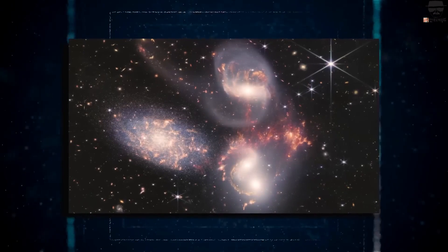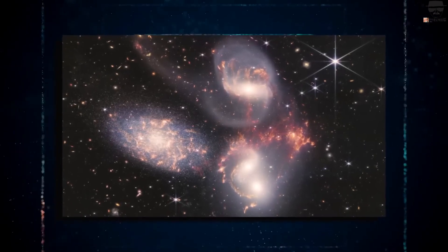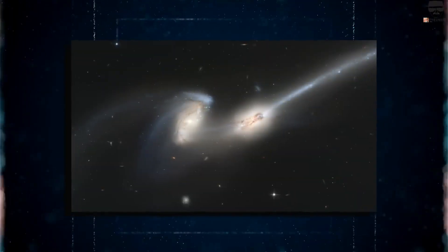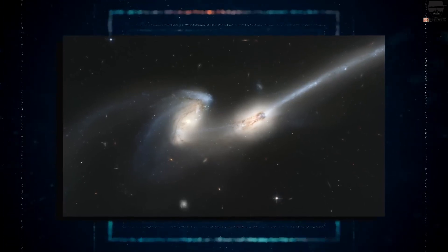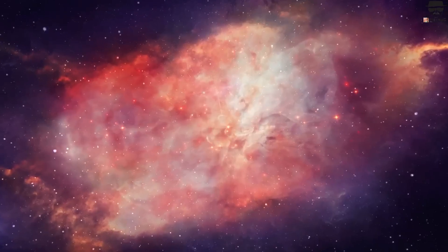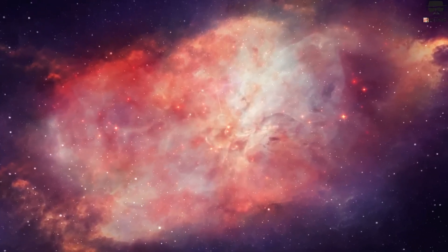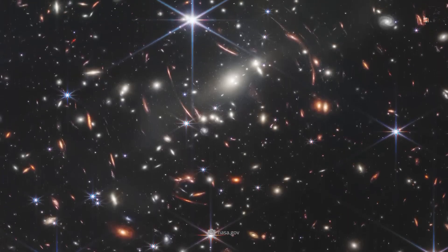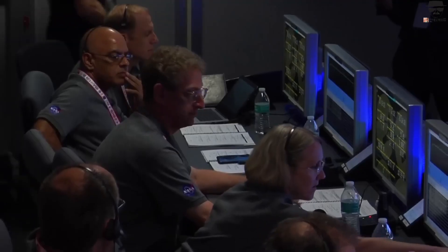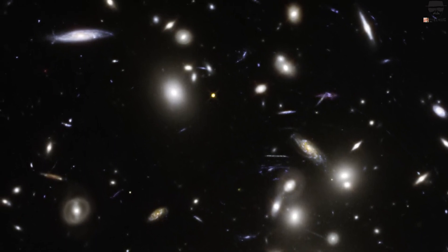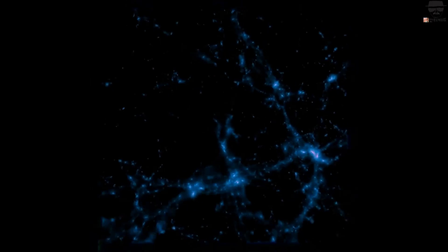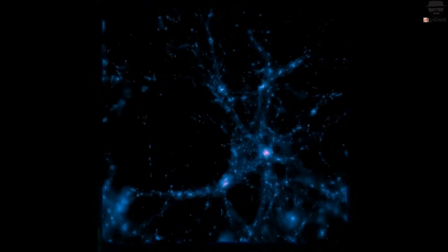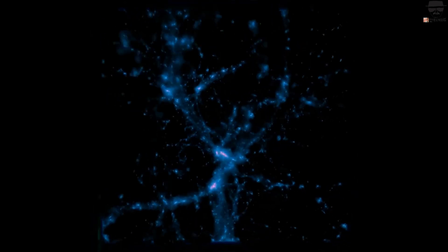Webb's image also shows faint tidal tails extending from the mergers' outskirts, indicating the gravitational attraction between the two galaxies. Finally, reddish-orange streams and filaments represent organic material scattered across ARP 220. Now let's delve into a remarkable discovery that has left the scientific community in awe. When researchers initially stumbled upon primordial galaxies at the universe's edge, they were skeptical about the possibility.